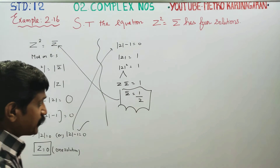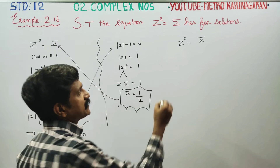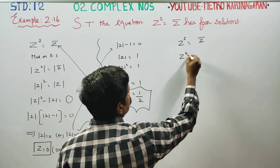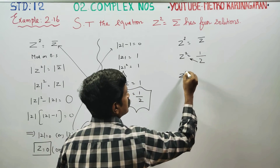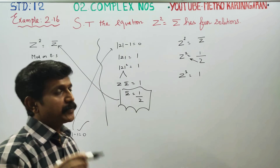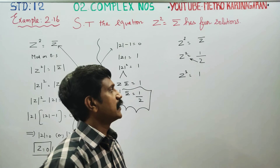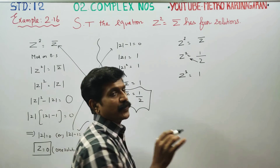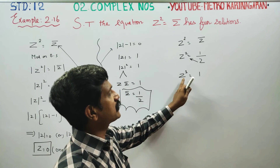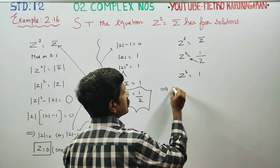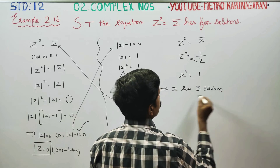The main sum is Z² equals Z-conjugate. Substituting, Z² equals Z-conjugate equals 1 by Z. Cross-multiplying, Z cube equals 1. By the fundamental theorem of algebra, a degree-3 equation has 3 roots, so Z³ = 1 gives 3 solutions.